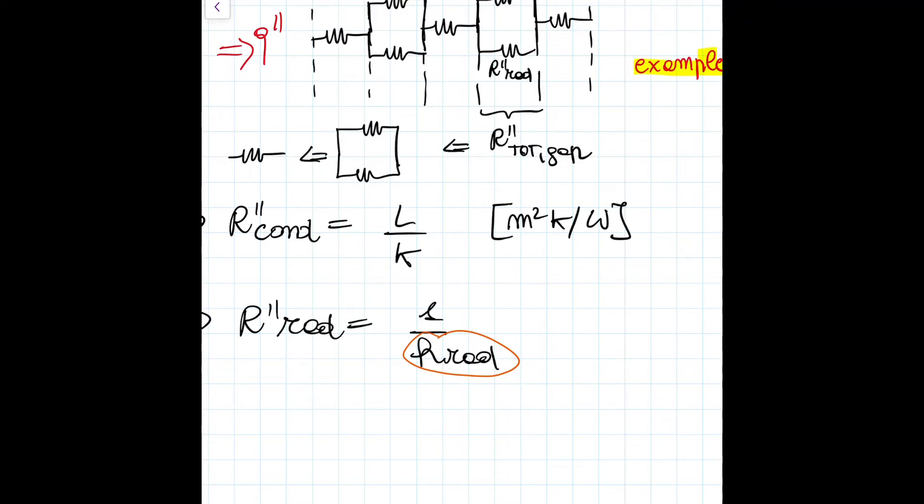Indeed, the question provides us with an expression to simplify this H_rad, which can be considered to be 4σT_average cubed, where σ is the Stefan-Boltzmann constant. And T_average, I'm actually going to switch color right now, T_average is given to us in the question. It's equal to 470 Kelvin.